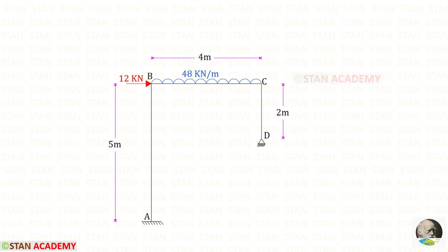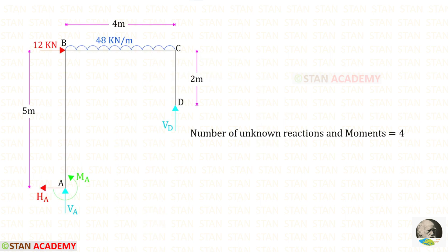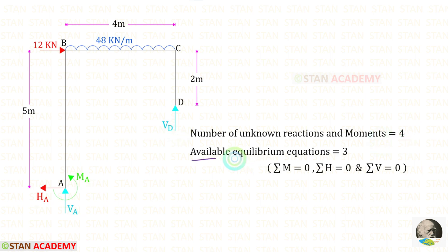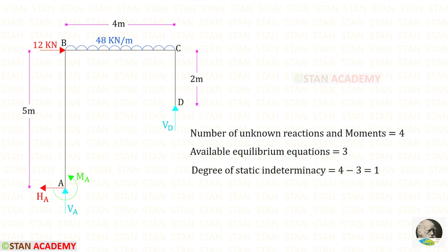At point A there is a fixed support and at point D there is a roller support. In this frame the number of unknown reactions and movements are 4: at point A we have the horizontal reaction, vertical reaction, and moment, and at point D only the vertical reaction — so totally 4. The available equilibrium equations are 3, so the degree of static indeterminacy is 4 minus 3, which equals 1.